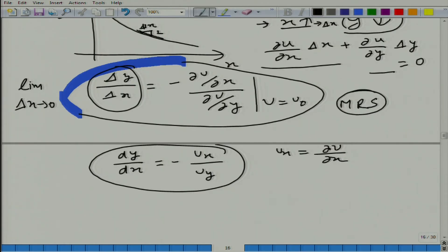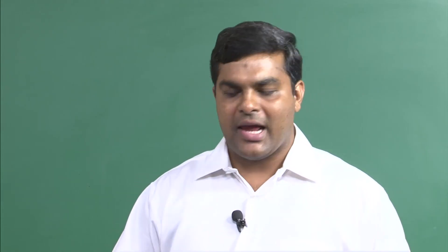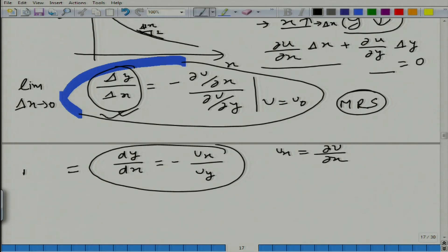Of course, we talked about a special case of MRS where change in x was given by 1 unit, but this is more general definition of MRS. So, this is MRS, marginal rate of substitution of good 1 with respect to good 2. In other words, MRS is nothing but the slope of the indifference curve.